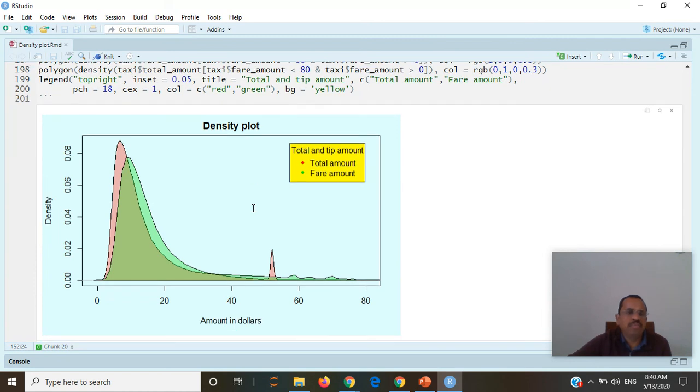Another advantage of density plot is compare two values together with different colors and different visualization. This is just an example of taxi fare data. This is amount in dollars that is up to $80. Green is a fare amount and red is total amount including total taxes and tips and whatever additional to the fare. We can see the distribution of fare and distribution of total amount and we can easily interpret how it looks like very well in density plot and it is very difficult to get this type of distribution for large data set in histogram.